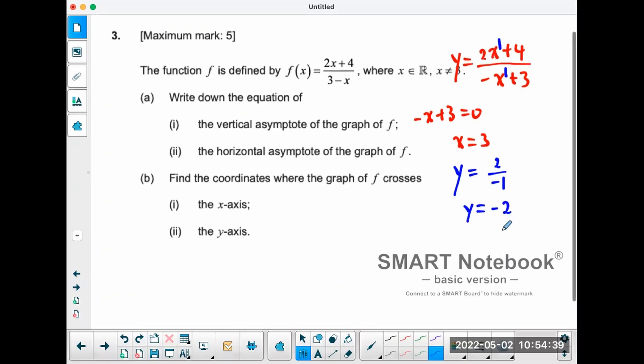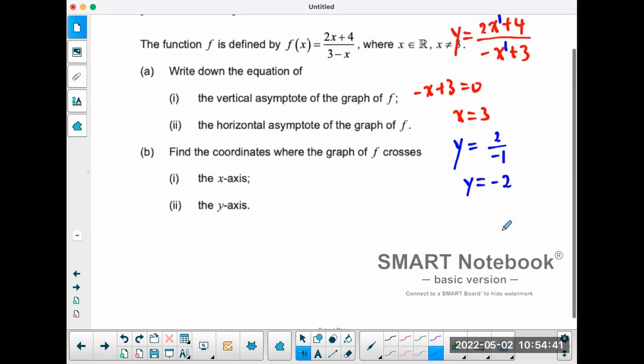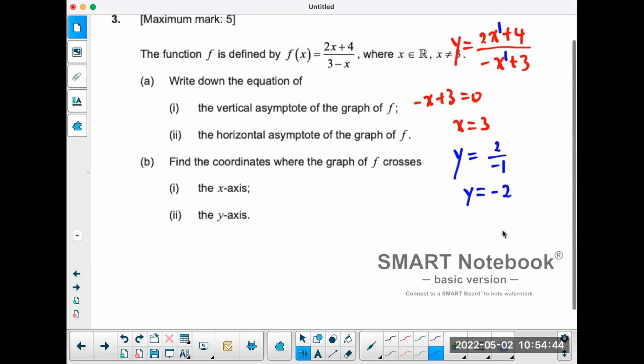Okay, part b of the question, they're asking for the coordinates where the graph crosses the x-axis or the y-axis. Basically you're looking for the x-intercept and you're looking for the y-intercept. Let's start off with the y-intercept. Y-intercept is when you sub x equal to zero. X zero, x zero, that's four over three. So y equals four over three.